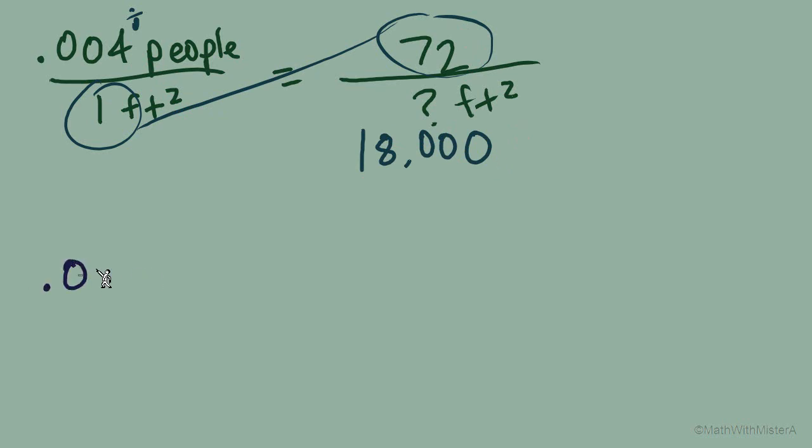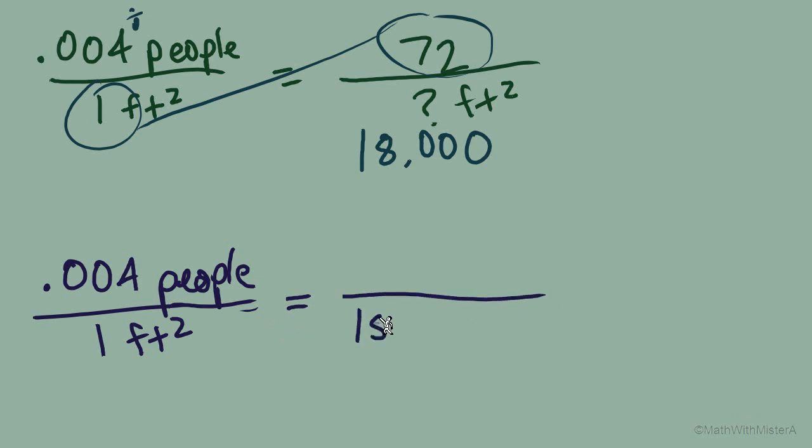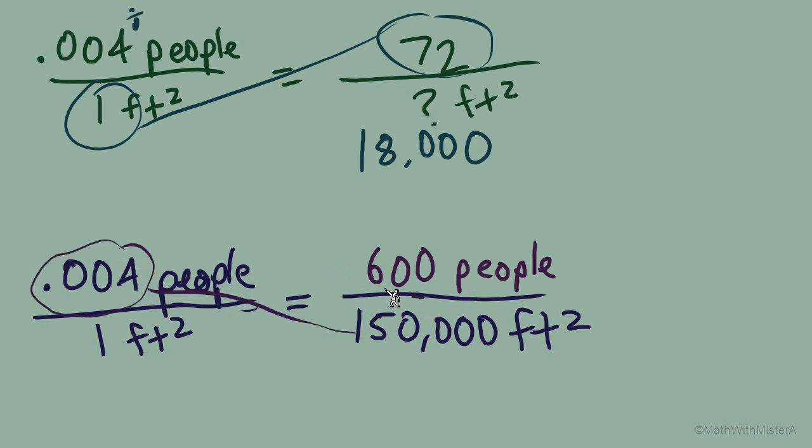Another quick example, going back to the rate for population density, we can calculate how many people would be able to live on 150,000 square feet. In this case, it might be easier to see that we're actually multiplying the denominator 1 times 150,000. So we'll do the same to the numerator, 0.004 times 150,000, and we'll come up with 600 people. We could still use the same steps as above with solving a proportion. Multiply diagonally and divide by the third. That would still give us the same result, 600 people.